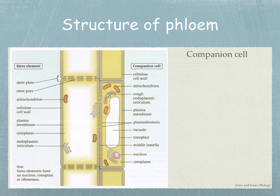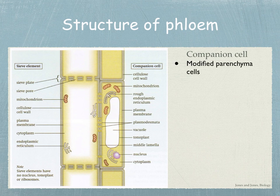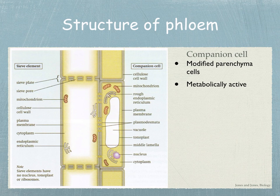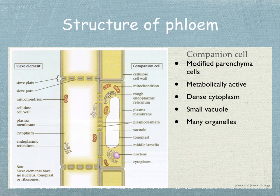What is different about the companion cell? Well, companion cells are always associated with sieve elements, and both come from the same cell division. Companion cells are actually modified parenchyma cells. The sieve elements lack structures such as nuclei, ribosomes, and Golgi apparatus, so they are unable to carry out the metabolic processes essential for their survival. The companion cells are metabolically active because they've got these different organelles — a dense cytoplasm, a small vacuole, and many organelles that assist with metabolic activities. They've also got plasmodesmata between the two cells that link the two types of cells.